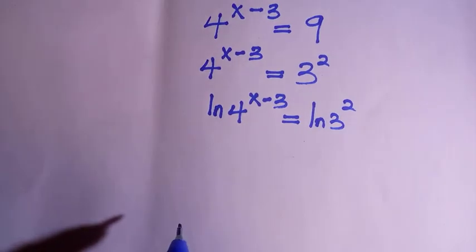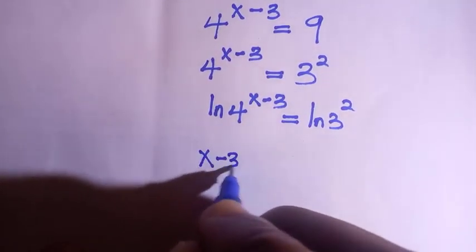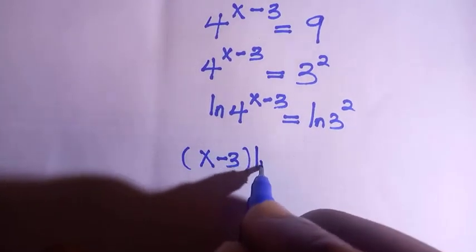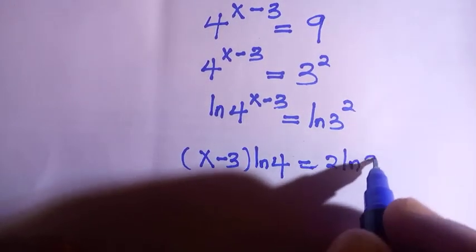And if this power comes down, then we have x minus 3 ln of 4 equals to 2 ln 3.